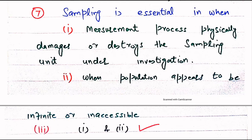When sampling units are physically destroyed or damaged — for example, in a factory we check the lifetime of bulbs manufactured, so we take a sample and apply the procedure on this sample, because after the experiment the unit will be destroyed and we cannot do this procedure on the whole population. When the population appears to be infinite or inaccessible, we perform sampling. The right choice is 1 and 2.